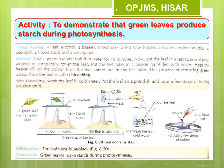Now let us perform an activity to show that green leaves produce starch during the process of photosynthesis. We take a green leaf and boil it in water for about 10 minutes. Then take out the leaf from the water and put it in a test tube containing spirit or alcohol. Put this test tube in a beaker half filled with water and heat the beaker till the color from the leaf comes out into the test tube. This process of removing the green color from the leaf is known as bleaching.